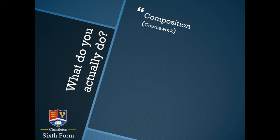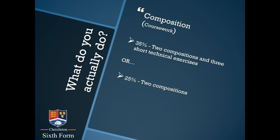The other element of coursework is composition, creating your own new music. If you were to choose the larger percentage, you would complete two compositions, but in addition you would do three short composition technical exercises. That might seem a little bit unfamiliar at the moment. The other alternative for 25% is you just complete the two compositions.